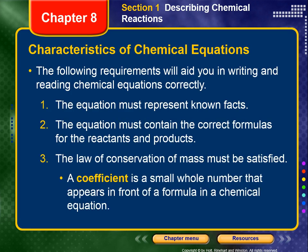You also need to know the three characteristics of a correctly written chemical equation. Number one: the equation must represent known facts — they have to represent reality, you cannot go on a guess. Number two: the equation must contain the correct formulas for the reactants and the products. Lastly: the law of conservation of mass must be satisfied, which will lead into our ability to balance an equation by inspection.